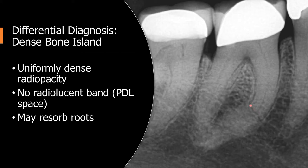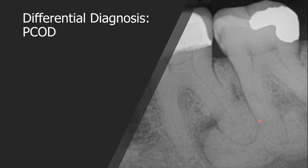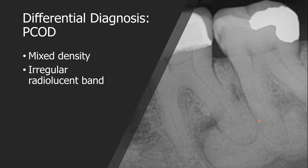Here you may see the apical periodontal space of the resorbed root. Periapical cementoosseous dysplasia is also easy to identify. In the later stage, there are irregular radiopacities surrounded by an irregular radiolucent band and a mixed density. Cementoosseous dysplasia is most common in middle-aged females of African descent — for example, a 40-year-old African-American female.